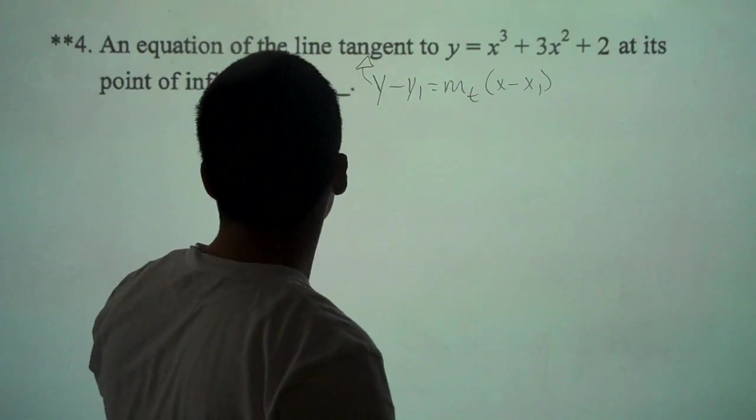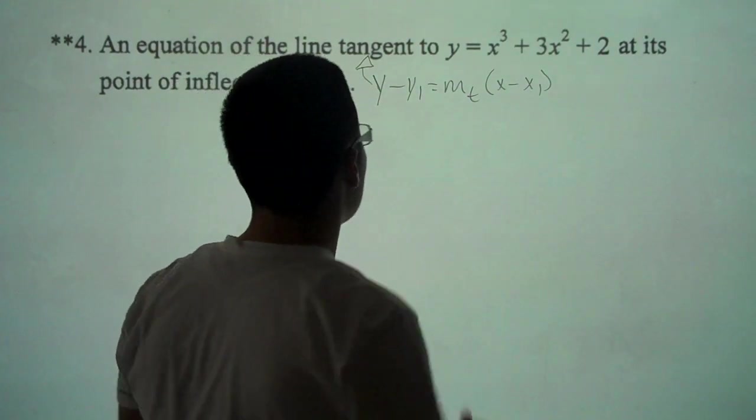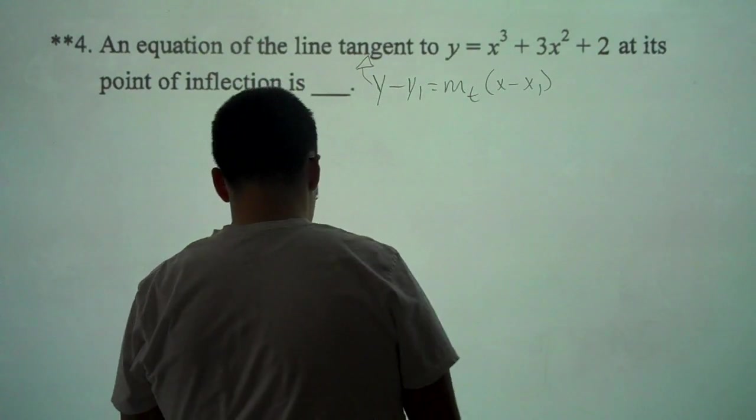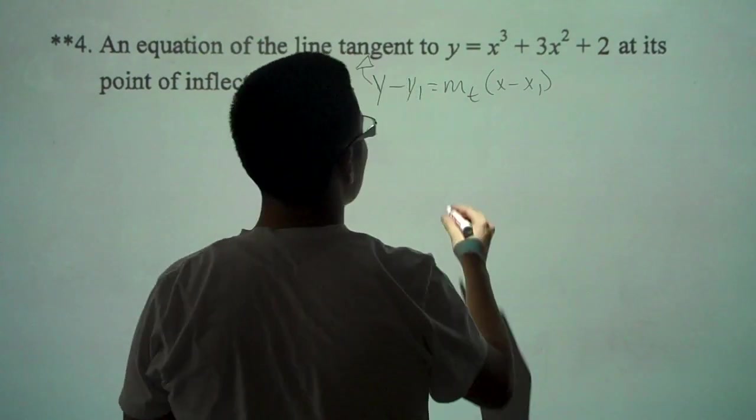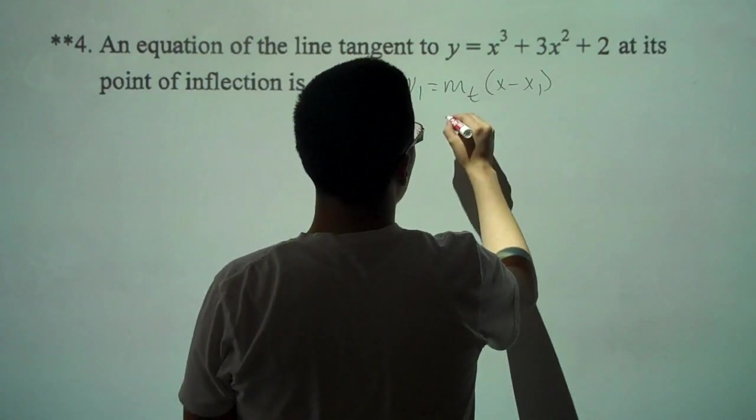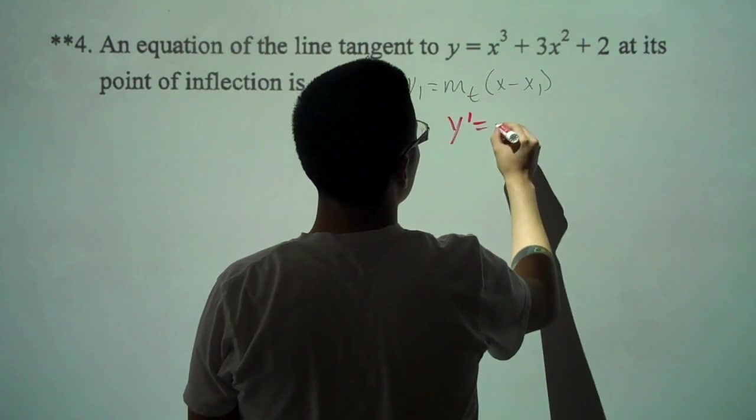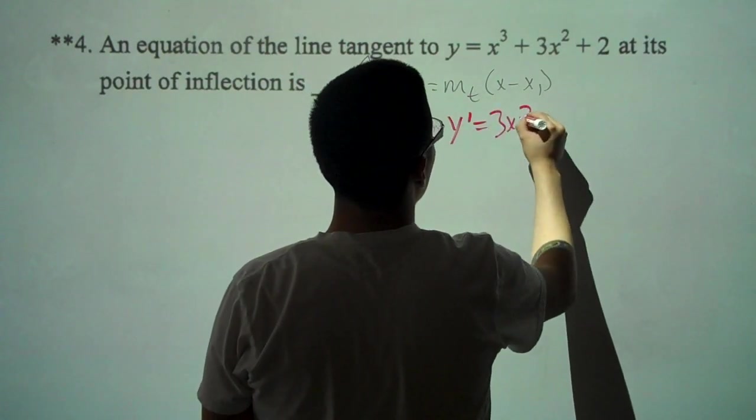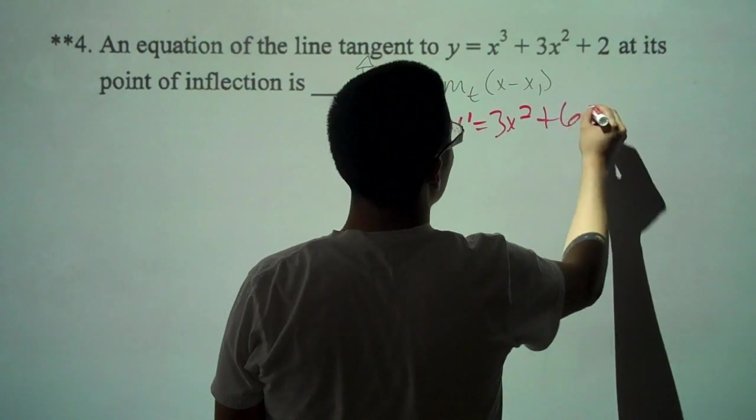Okay, we have to find our point of inflection, so we've got to do y prime first. y prime equals 3x squared plus 6x.